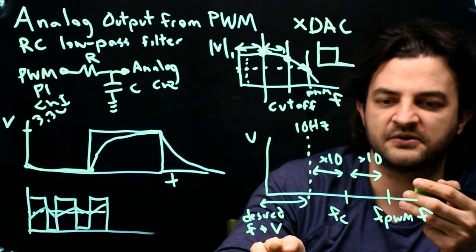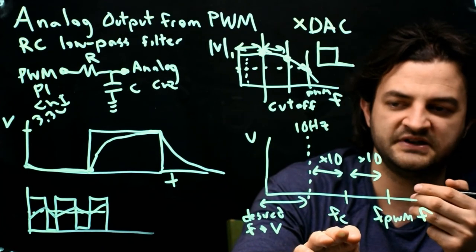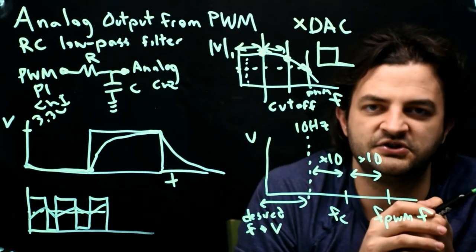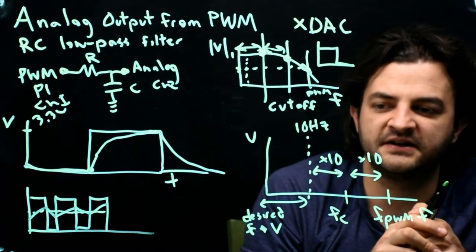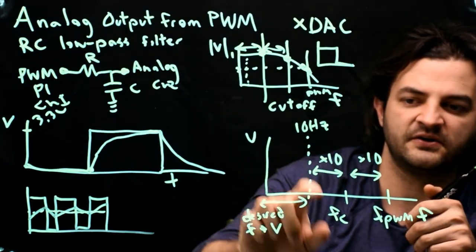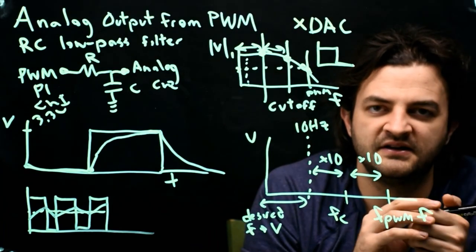So sometimes you work backwards. You choose a PWM, go to a cutoff frequency, and then that would set the maximum rate at which you could change your analog voltage. Or sometimes you go the other way. You're given a spec I need to change at least 10 hertz, so I would use a cutoff frequency of 100 hertz. My PWM would have to be at least 1000 hertz.